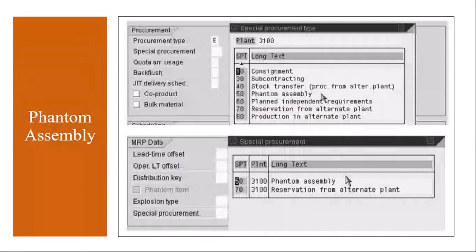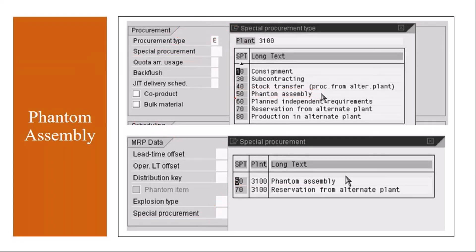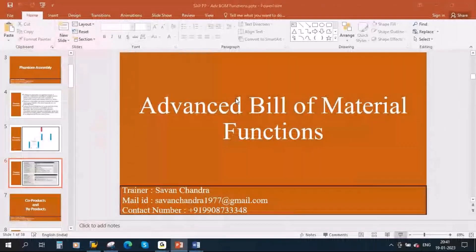To define a material as a phantom assembly, you need to make settings in two places. First, in the material master under the MRP2 view, there is a field called Special Procurement — you define it as 50 (Phantom Assembly). Second, in the BOM item details for that component, under Special Procurement, you also define it as 50 Phantom Assembly. So the settings must be made in both places. Now let's see this in the system.